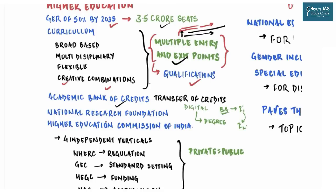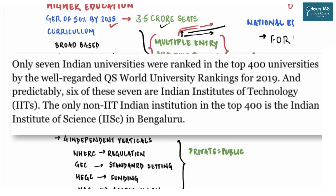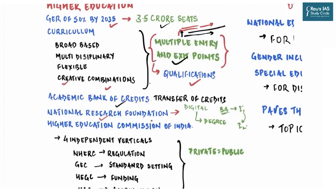The government has also announced the creation of an apex body for fostering a strong research culture and building research capacity across higher education — to be known as the National Research Foundation. This is needed because India's higher education institutions lag considerably when it comes to research and knowledge creation: they impart education quite well but, when it comes to creating new knowledge, they lag significantly.